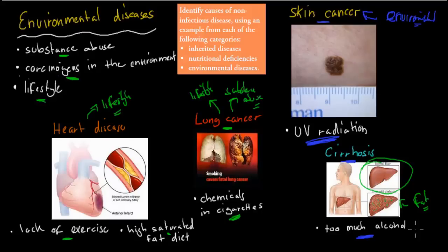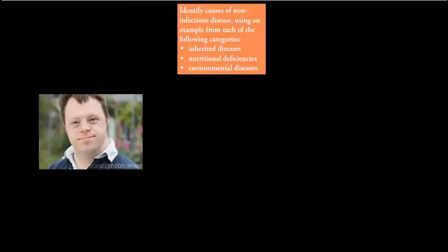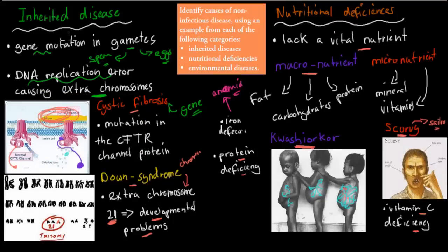To summarise this dot point — identify causes of non-infectious diseases using one example from each category: heart disease is an environmental/lifestyle disease caused by lack of exercise or high saturated fat diet; Down syndrome is an inherited disease caused by an extra chromosome; and scurvy is a nutritional deficiency disease caused by vitamin C deficiency. It's a straightforward learning objective.